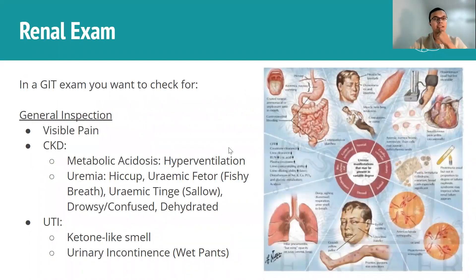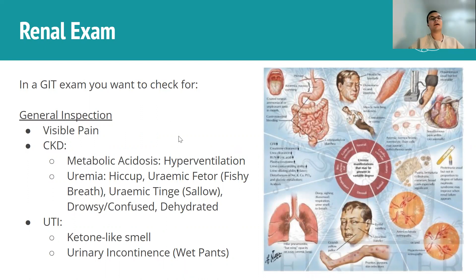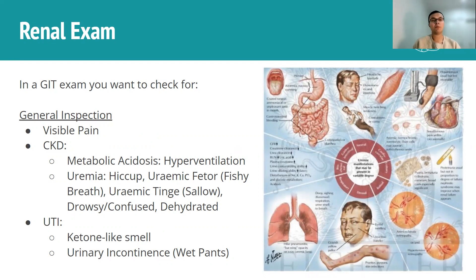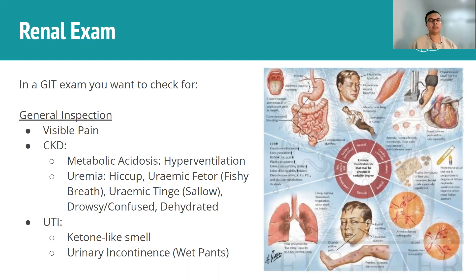So let's start off with general inspection. On the renal exam, you should look first of all for visible pain. That can be subtle — the person maybe grimacing a little or leaning away from the painful side — or it can be more severe where the person is in agonizing pain and squirming around in the chair. Either way, you really don't want to miss this sign, or at least you want to point out in your OSCE that the person is not in any visible pain, because that's a very important finding.